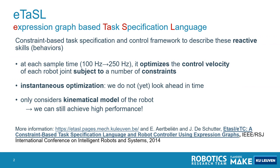In order to easily apply this control methodology, we have developed a software package called ETASL, the expression graph based task specification language. Using this software we can specify a task in terms of constraints with a first order behavior. At the framework level it uses instantaneous optimization — in other words ETASL itself does not look ahead in time. We also only use a first order behavior for constraints and only consider a kinematic model of the robot, but as you will see in the examples we can still achieve very high performance.